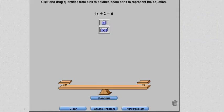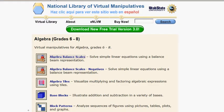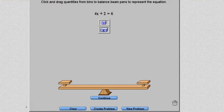This is from the National Library of Virtual Manipulatives, if you want to search that out. Here I'm just going to look at a representation using a scale for this equation: 4x plus 2 equals 6.